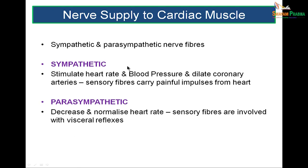Cardiac muscle is supplied by the autonomic nervous system — sympathetic and parasympathetic. The sympathetic stimulates the heart rate, increases blood pressure, dilates coronary arteries, and carries sensory fibers of pain from the heart. The parasympathetics decrease and reduce the heart rate, and their sensory fibers are involved with visceral reflexes.